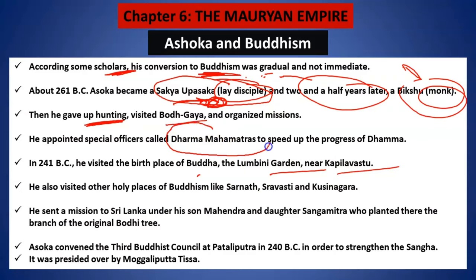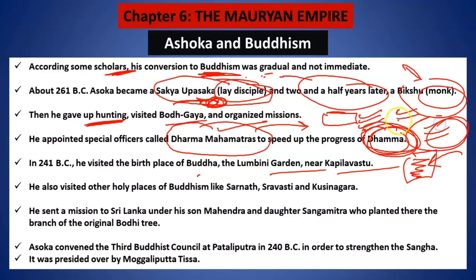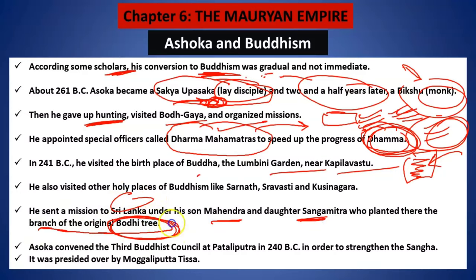He also appointed various officers known as Dhamma Mahamatras. The work of these officers — in officers ka kaam tha — was that Ashoka's knowledge, through the medium of Dhamma, should reach the people. Through his teachings inspired by Buddhism, he wanted to tell everybody that war is not the solution — we can win people through love also. He sent his son Mahendra and daughter Sanghamitra to Sri Lanka, where they also planted a branch of the original Bodhi tree.